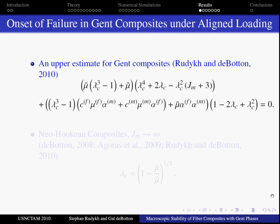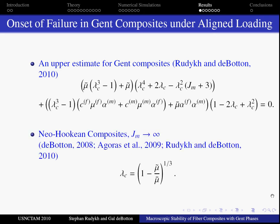In general it is a polynomial of 7th order and it can be solved numerically. Clearly when the locking parameter Jm goes to infinity, the equation reduces to the solution for the neohookean composite.